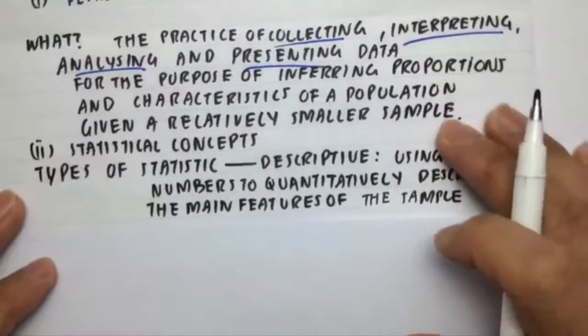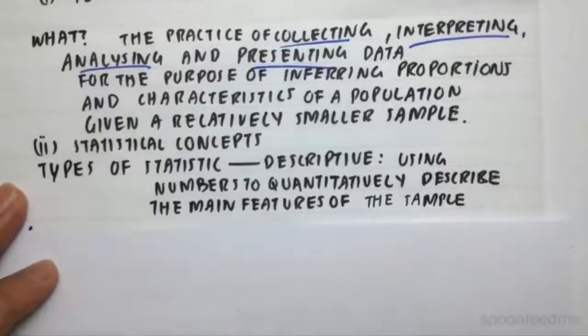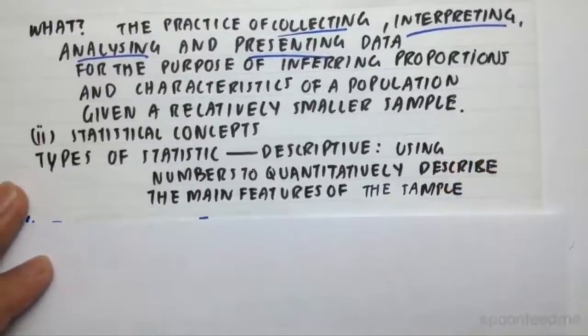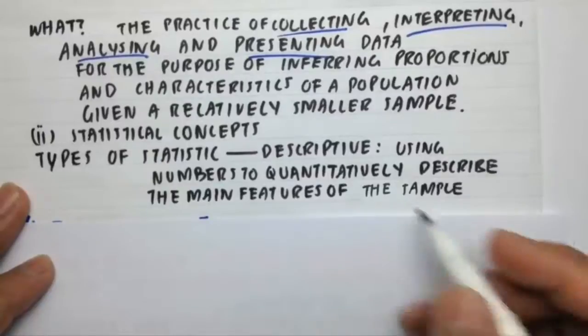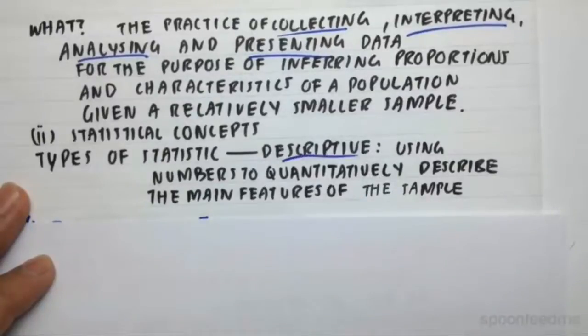So if we go to objective two and we start defining some of our statistical concepts, we have to start off with the types of statistics that we have. So firstly, it's descriptive. That's our first type. So that's using a number to quantify or describe the main features of the sample.